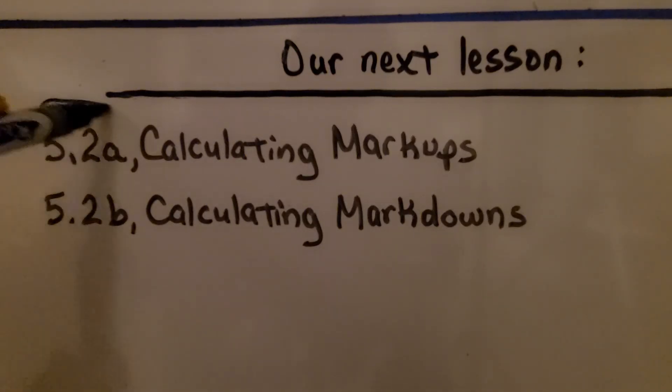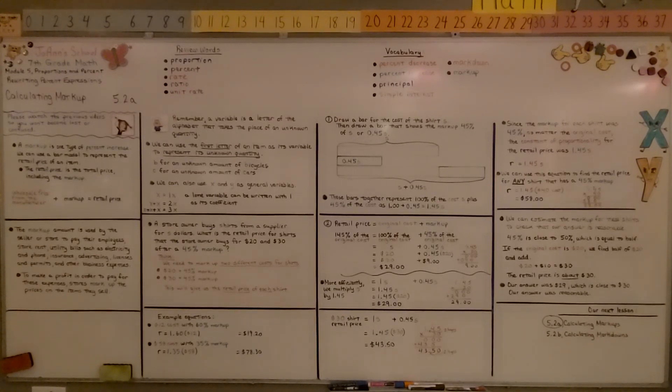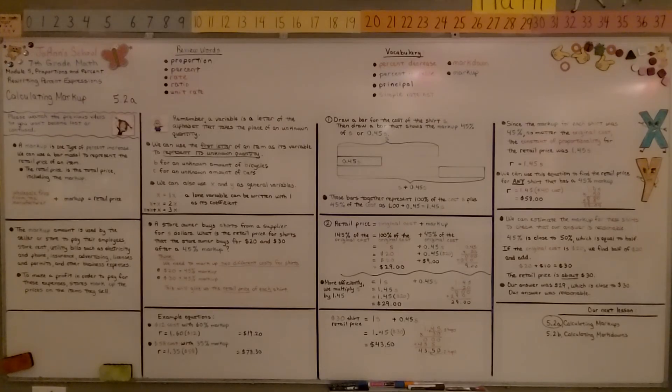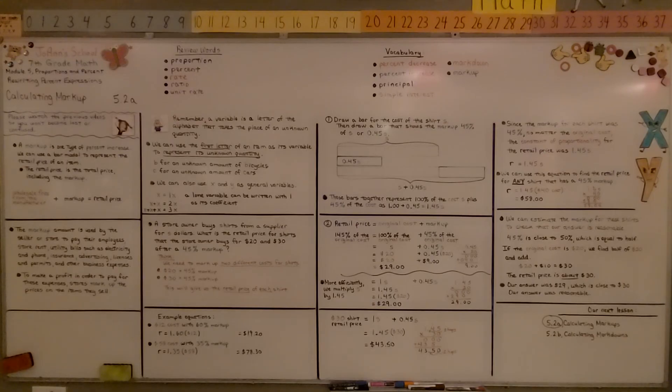We're finished with 5.2a. We're going to move on to the last part of this lesson, 5.2b, calculating markdowns. I think the most important part of this lesson is understanding how to write the equation: R equals one point whatever the markup is, multiplied by that cost. I hope you have a great day, and I hope you join me for the next part of the lesson.